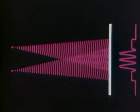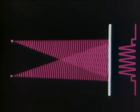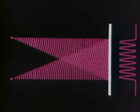Fissate le condizioni geometriche, la spaziatura fra le frange diminuisce all'aumentare della distanza fra le sorgenti virtuali. La spaziatura fra le frange diminuisce anche con la lunghezza d'onda.